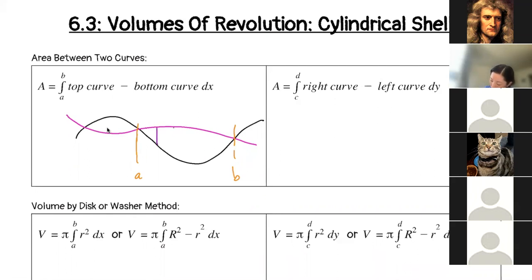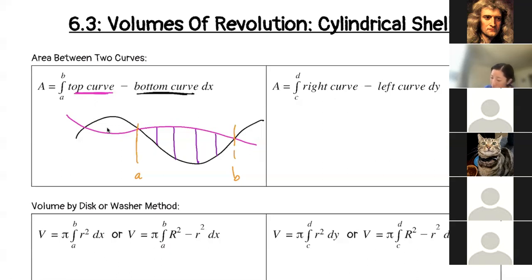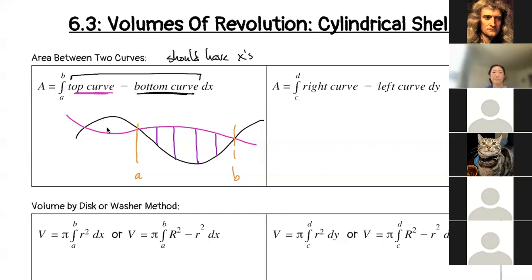If we drew these up and down, we'll notice that every single one of these purple lines has the pink function on top and the black function on the bottom. So we've got our top curve and our bottom curve, and we've got our A and B values. All of these equations in here should have x's in them. You really want everything to match — everything's going to have x.